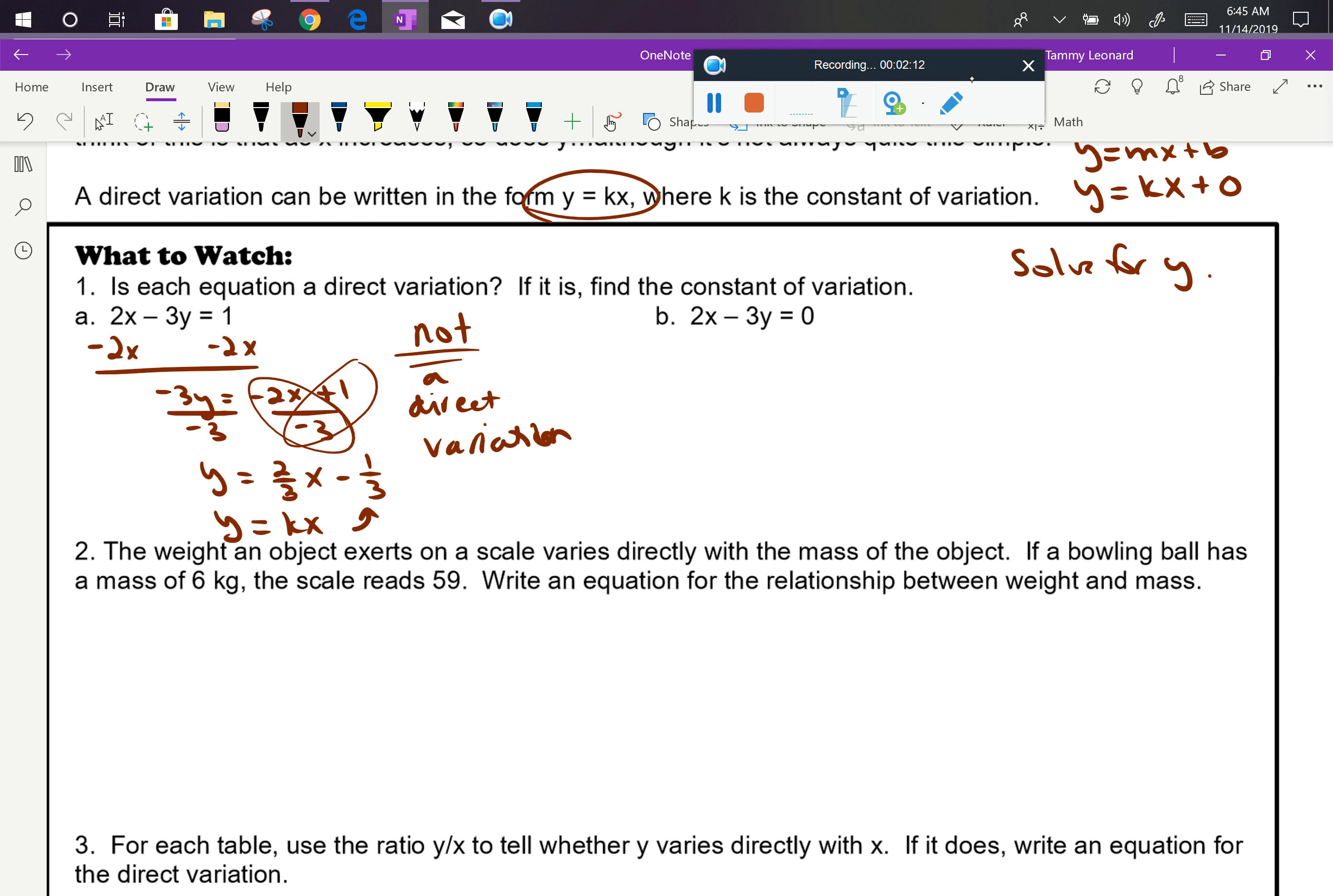Now as we look at the second one, we're going to subtract 2x from each side again. So it starts the same way because this equation is very similar. Zero minus 2x is just negative 2x since negative 2x plus zero is redundant. Then we divide both sides by negative 3 and y equals 2 thirds x.